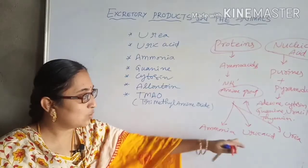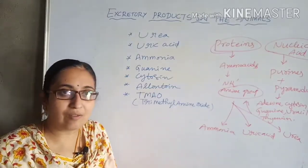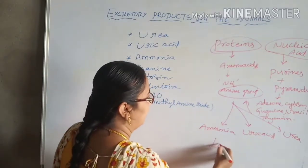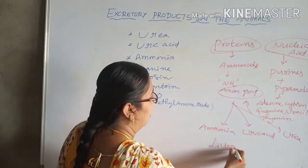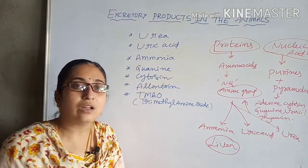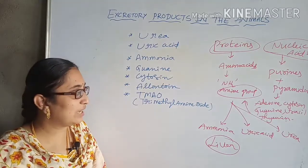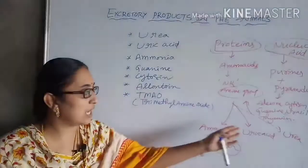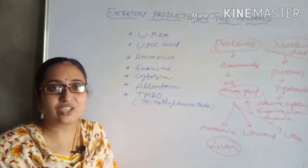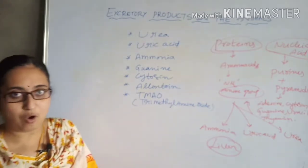This whole process takes place in vertebrates in the liver. In the liver, the ornithine cycle takes place, through which the harmful ammonia is converted into urea, which is less toxic and is stored temporarily in the excretory organs.